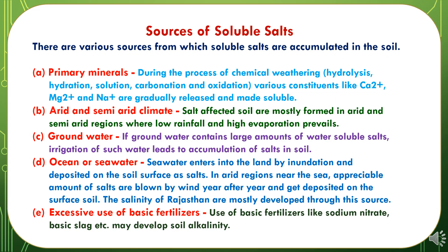There are various sources from which soluble salts are accumulated in the soil. First is primary minerals. During the process of chemical weathering like hydrolysis, hydration, solution, carbonation and oxidation, various constituents like calcium, magnesium and sodium are gradually released and made soluble. Second is arid and semi-arid climate. Salt affected soils are mostly formed in arid and semi-arid regions where low rainfall and high evaporation prevails.